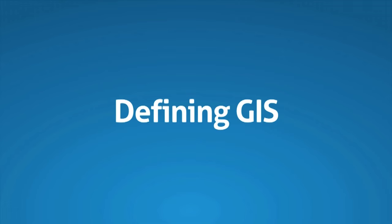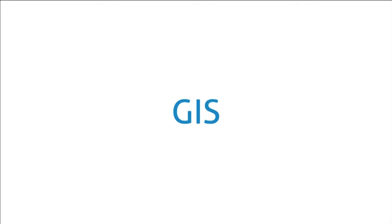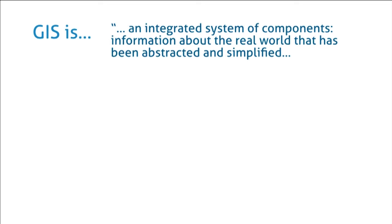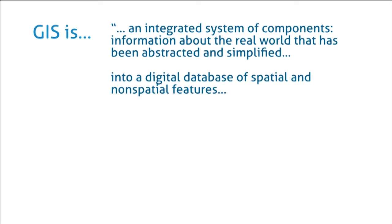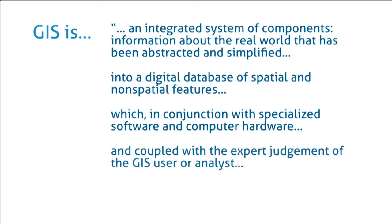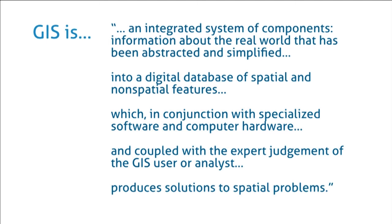Let's define GIS. GIS can actually have multiple definitions, but for this course we're going to define GIS as Geographic Information Systems. GIS is an integrated system of components — information about the real world that has been abstracted and simplified into a digital database of spatial and non-spatial features, which in conjunction with specialized software and computer hardware, and coupled with the expert judgment of the GIS user or analyst, produces solutions to spatial problems.